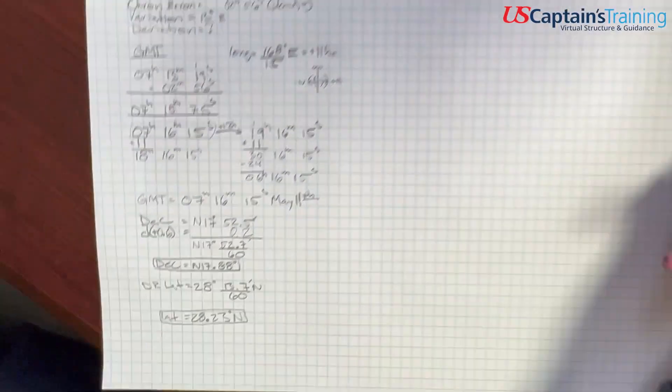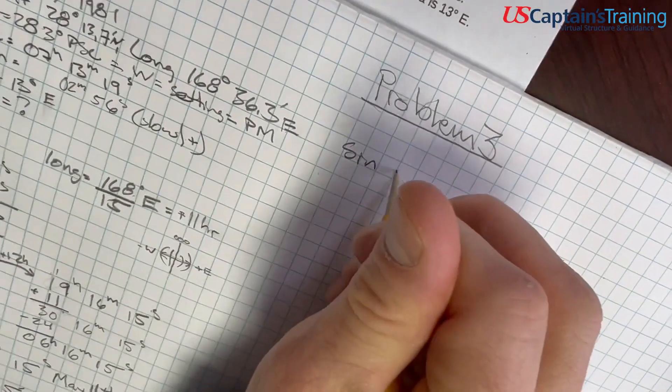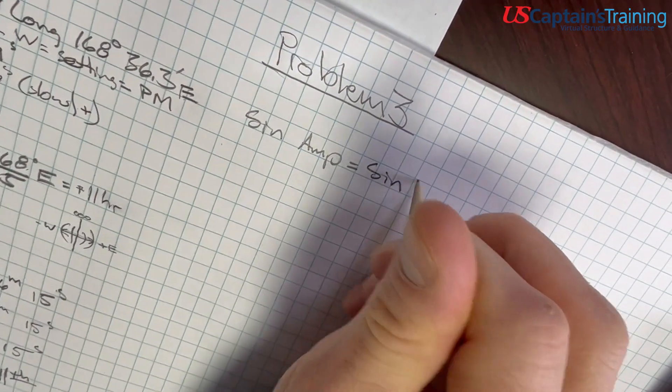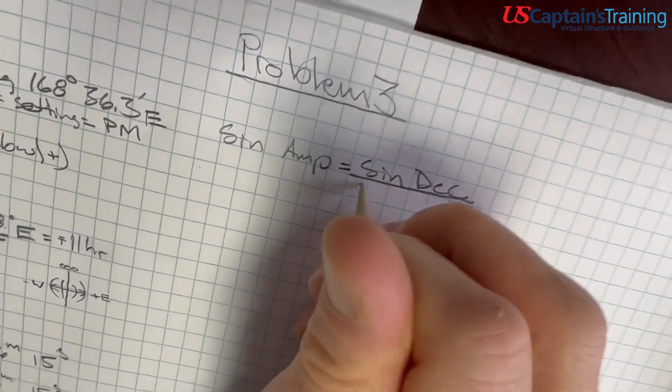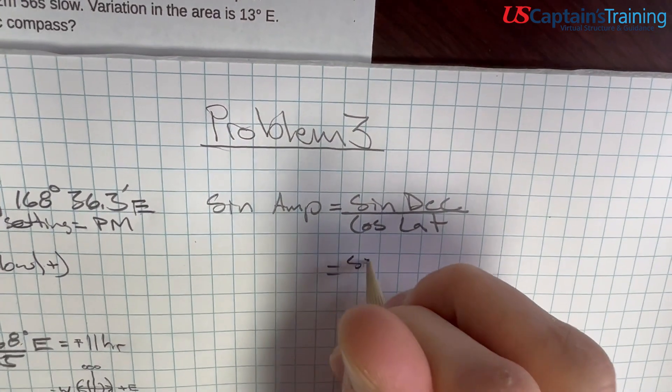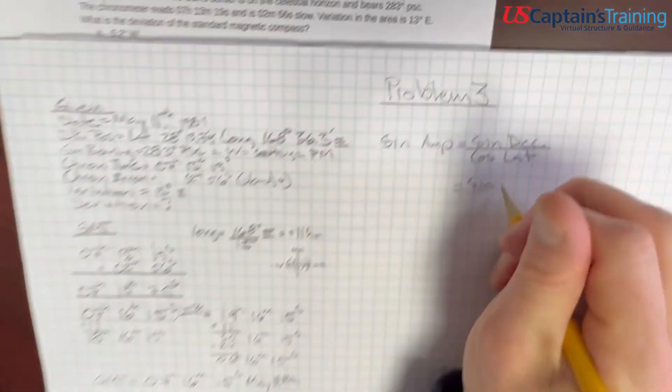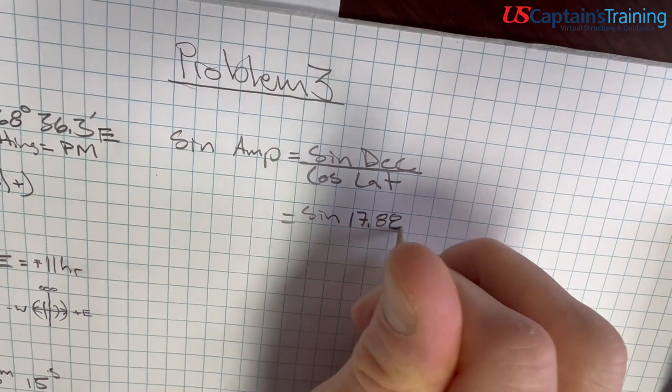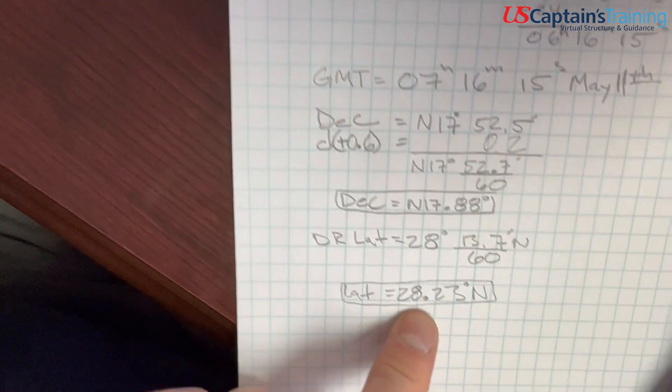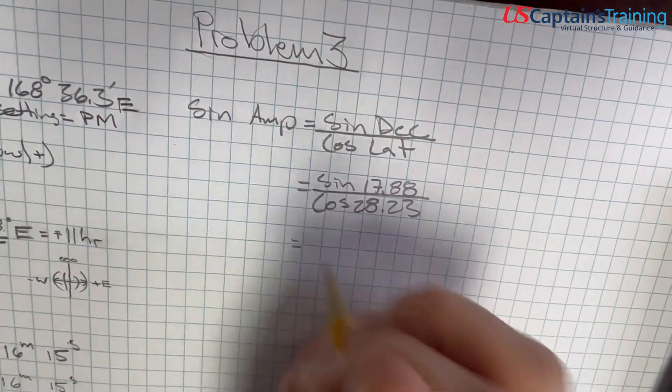Now we set these up and use the formula. Sine amplitude equals the sine of declination divided by the cosine of latitude. So we'll plug these in. Sine of our declination, which is 17.88, divided by cosine of latitude 28.23. Punch these in.